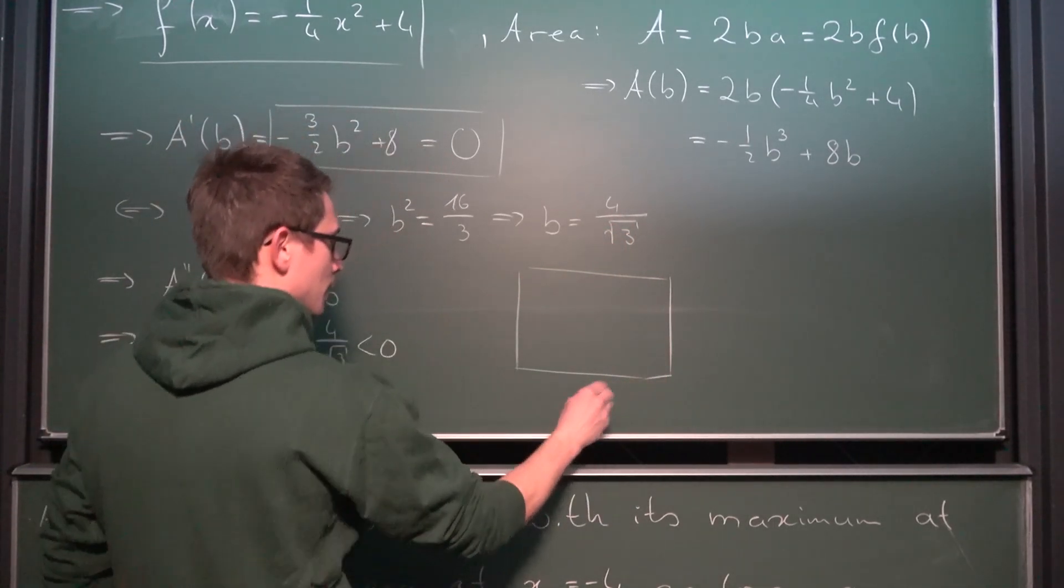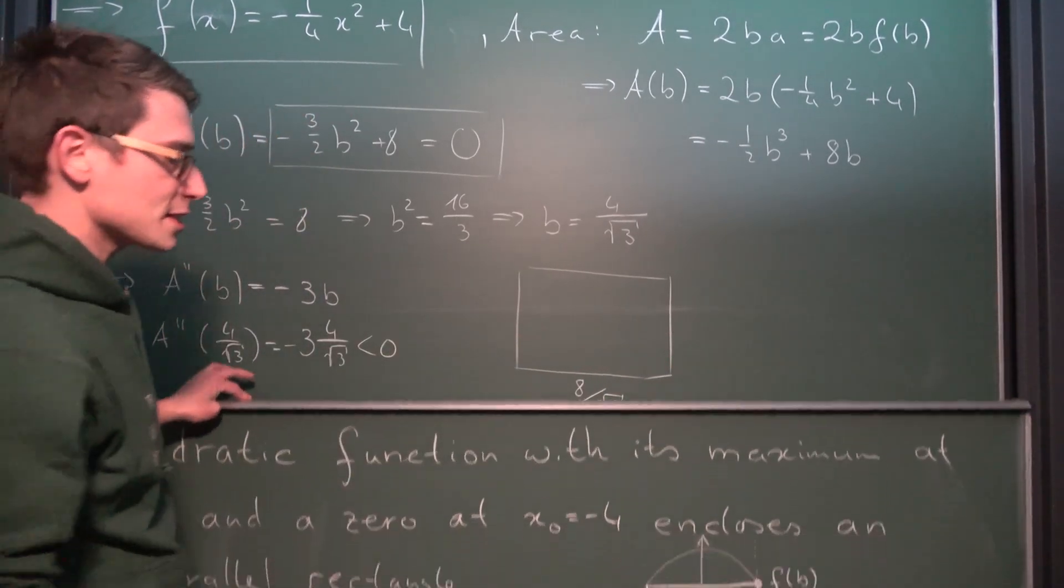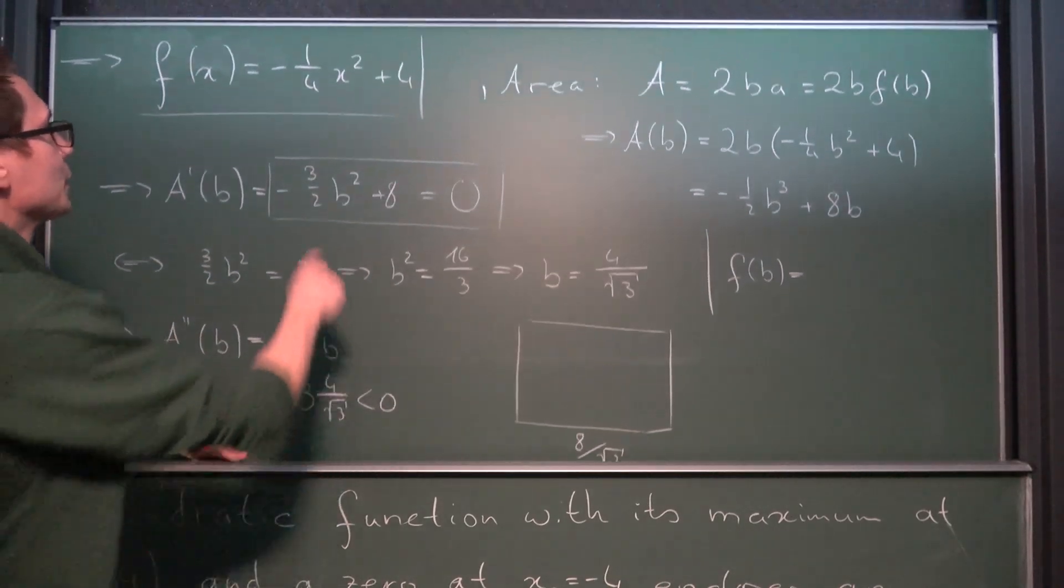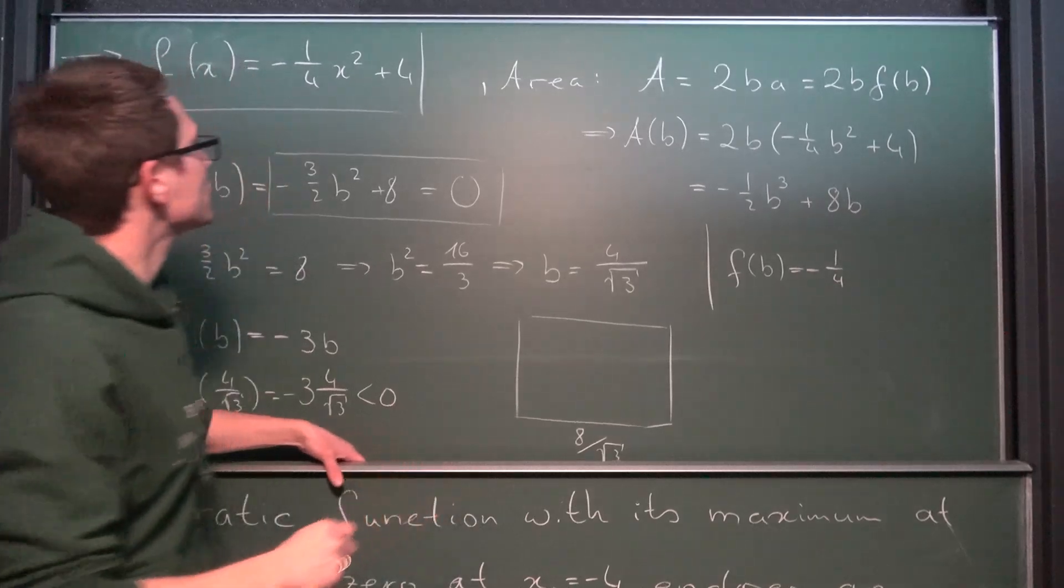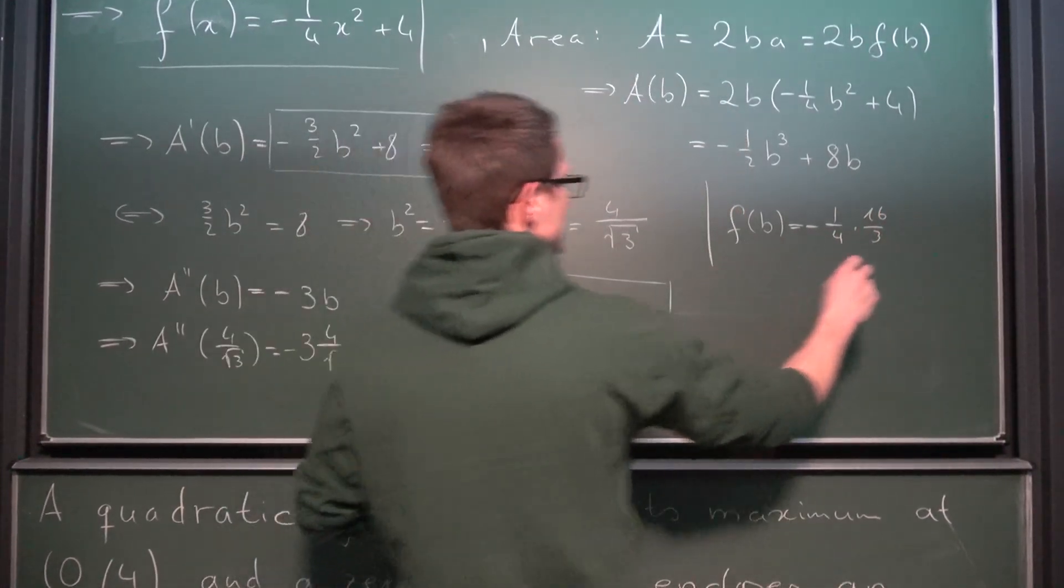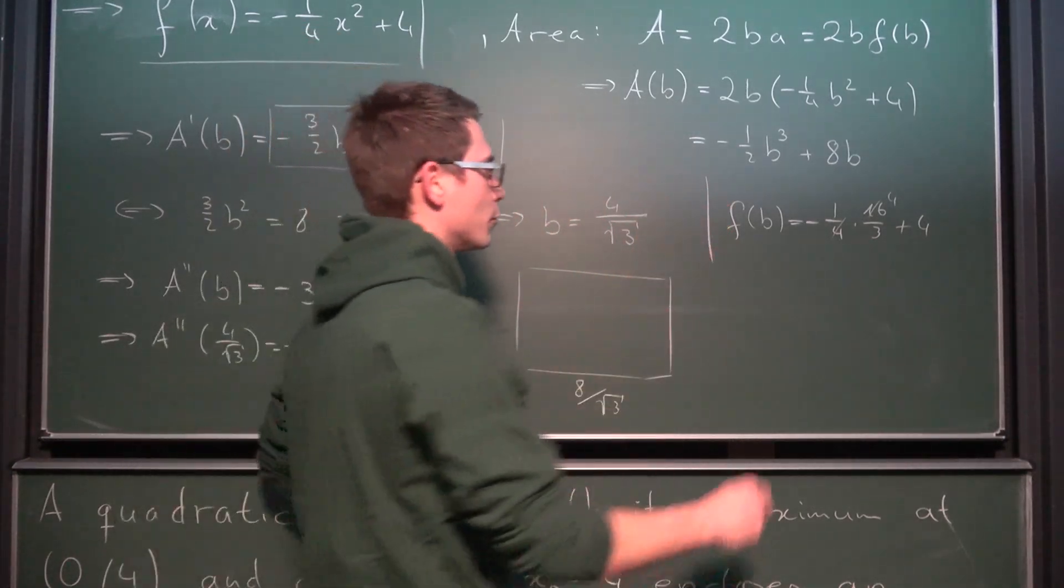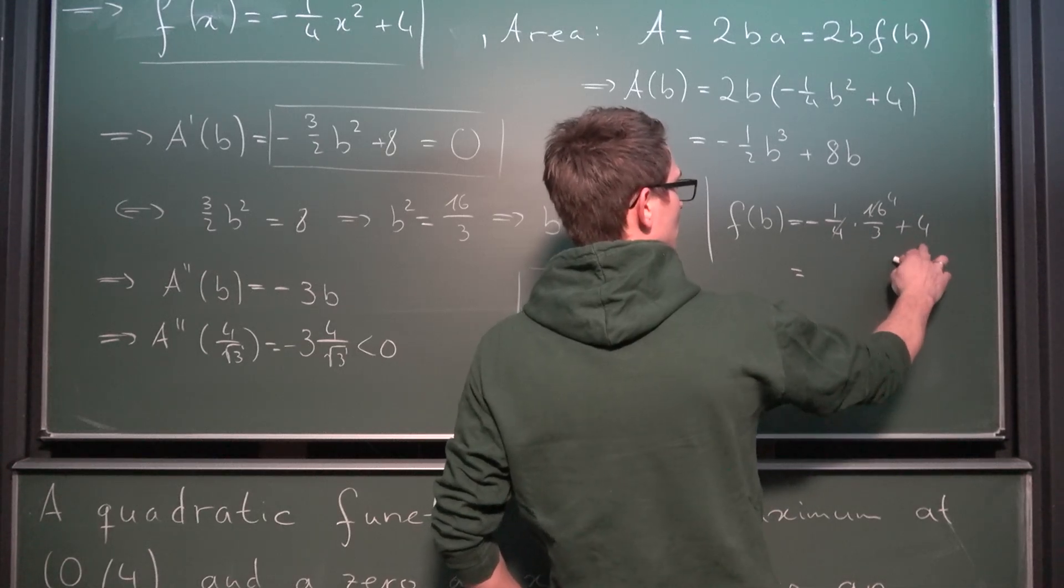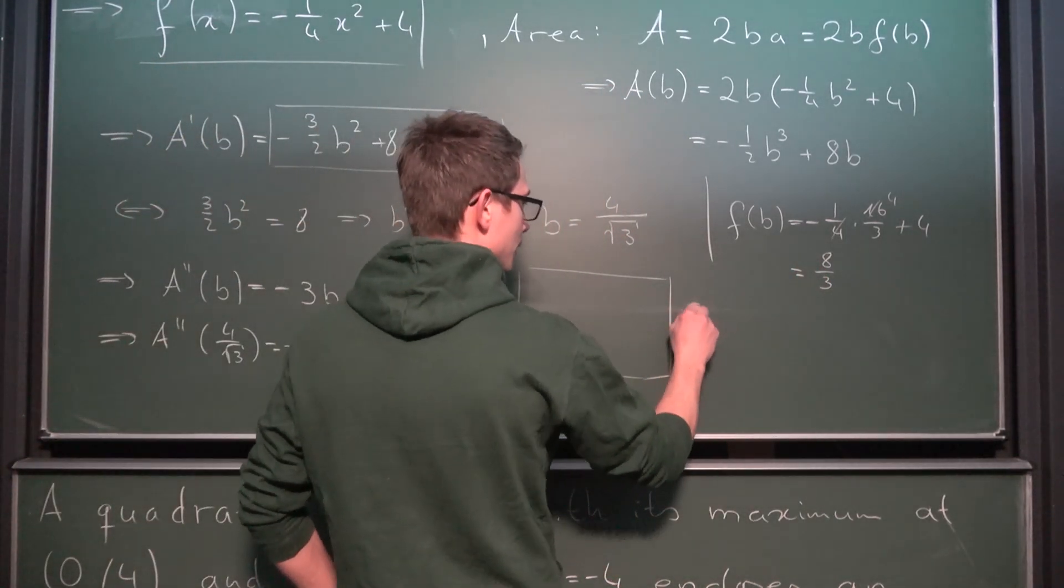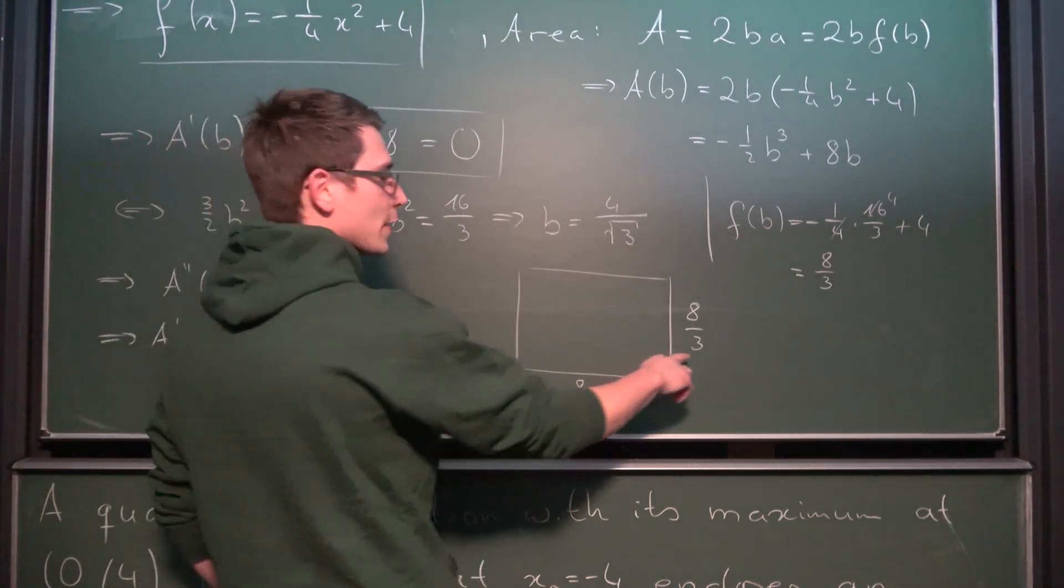Now our rectangle is going to have the base of 8 divided by square root of 3. Now what is the height going to be? The height is going to be well f(b). This is what we have found out. So let us calculate f(b) real quick. Okay if we plug it in we are going to get negative quarter. Now we are going to get x squared. x squared is the same as b² in our case. So this is going to give us times 16 over 3 and then plus 4. Now 16 and a quarter is going to cancel out to being just a 4. So we are going to get 4 minus 4 over 3 which is the same as this is 12 so 8 over 3. It shall be I suppose. This right here is going to be 8 over 3. And you might notice that indeed this right here is not a square. It is indeed a rectangle and its area is maximized if we have exactly those two side lengths. And I hope you did enjoy what you have seen today.